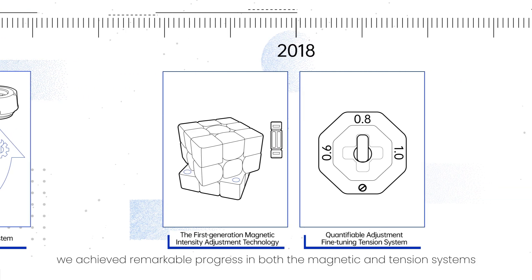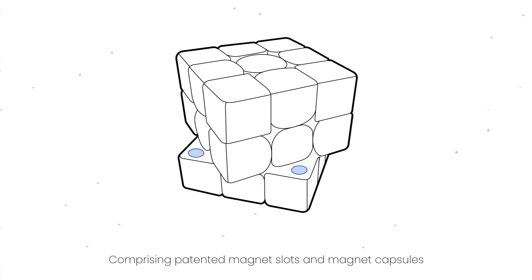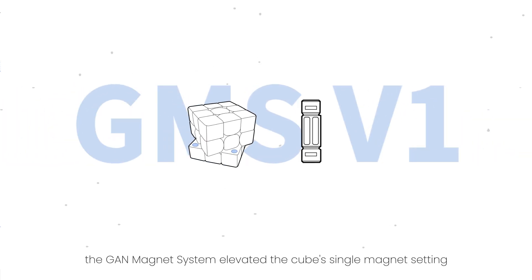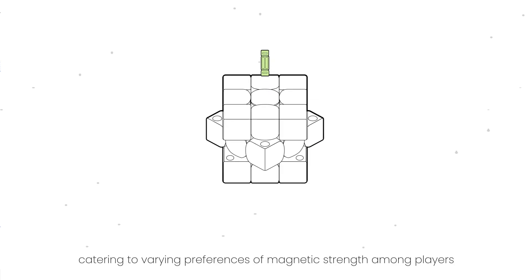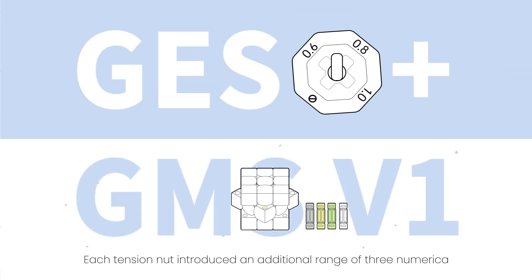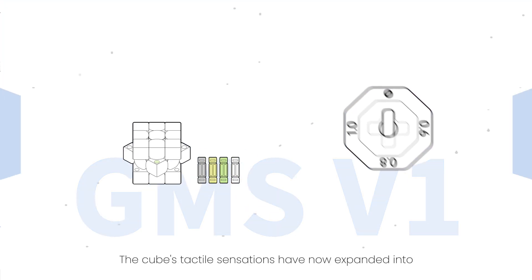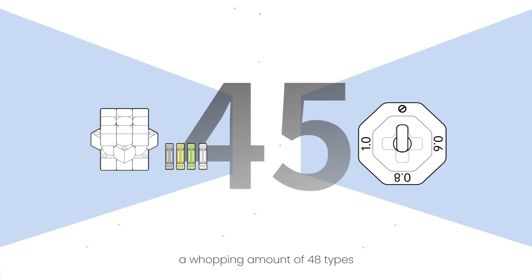In the year 2018, we achieved remarkable progress in both the magnetic and tension systems. Comprising patented magnet slots and magnet capsules, the GAN magnet system elevated the cube's single-magnet setting to a four-level spectrum, catering to varying preferences of magnetic strength among players. Each tension nut introduced an additional range of three numerical centerpiece travels, heralding the era of numerical tuning in one innovative leap. The cube's tactile sensations have now expanded into a whopping amount of 48 types.